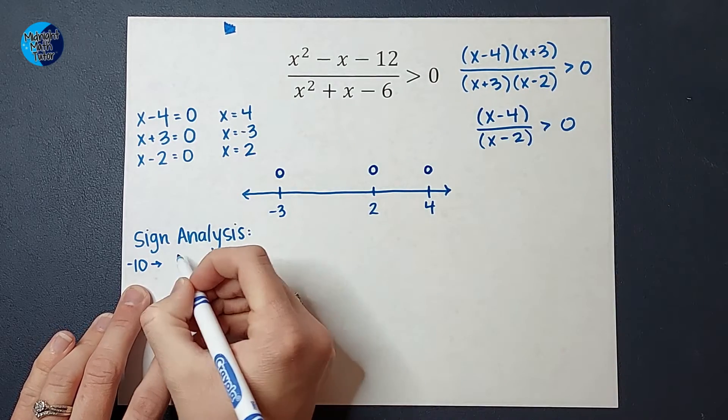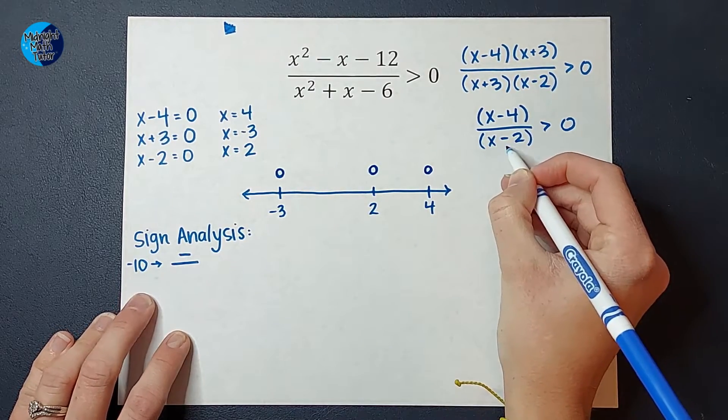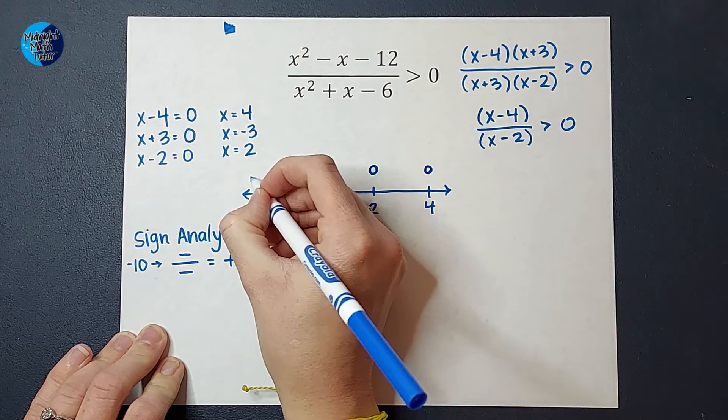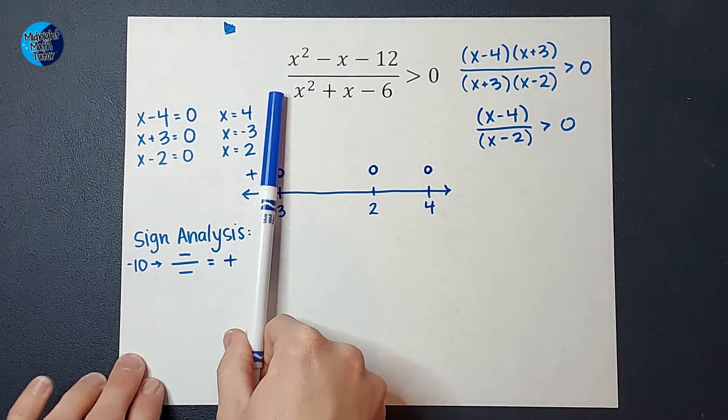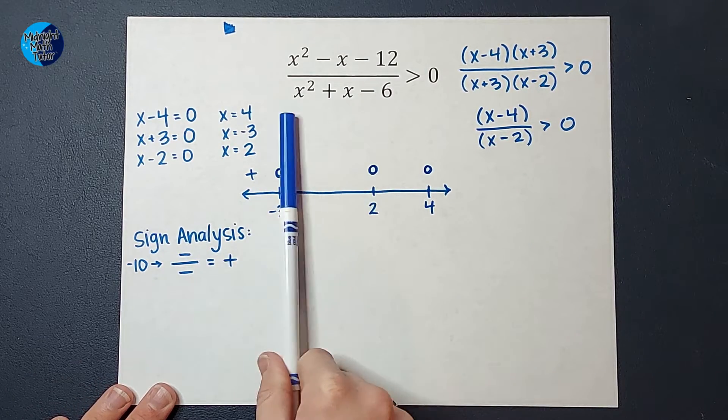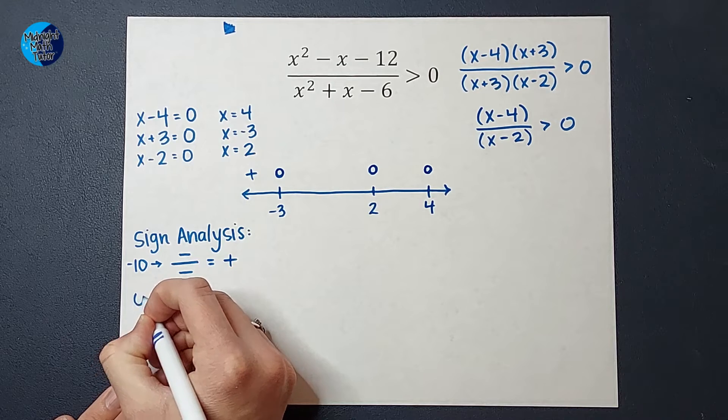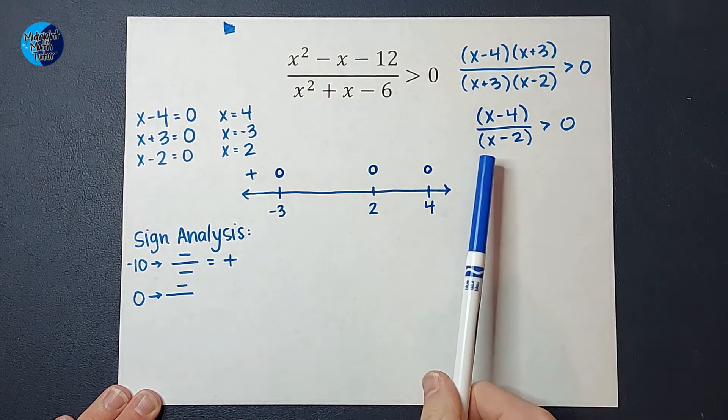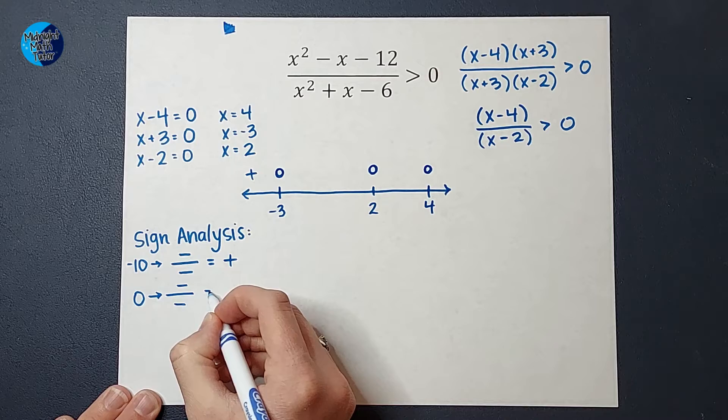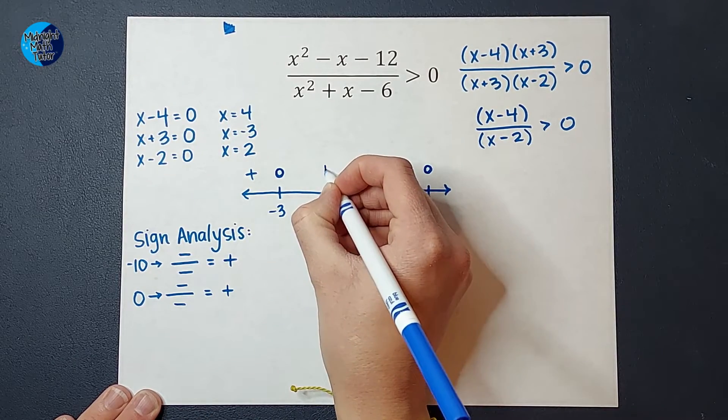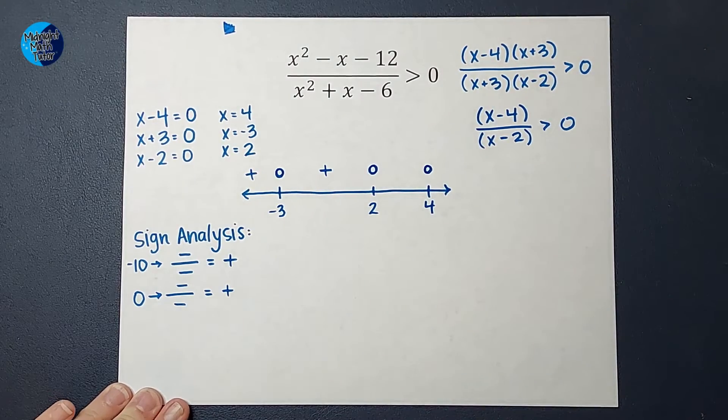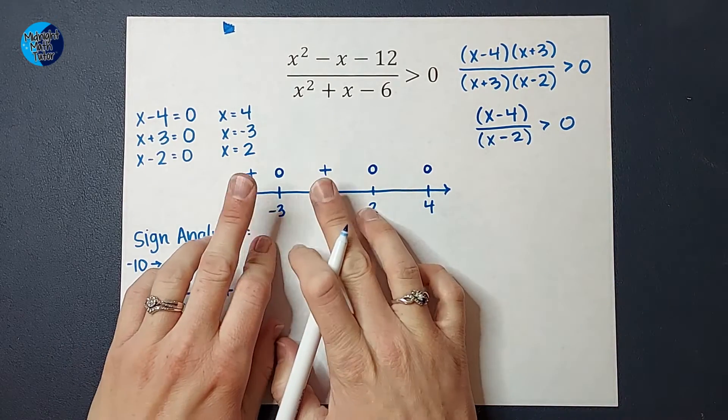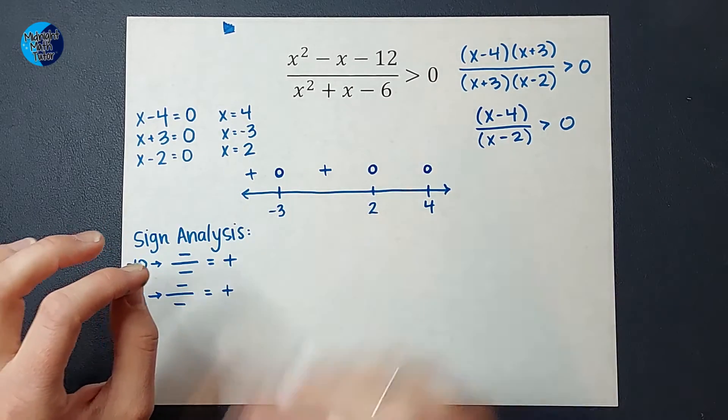All right. So there is my positive region to the left of negative 3. Now we're going to plug in a number between negative 3 and 2. Let's pick 0. 0 is in there. So if I had 0 minus 4, that would give me a negative on top. 0 minus 2 would give me a negative on bottom. Negative divided by negative is positive. Now, if you've been doing these problems before, oftentimes these alternate. Positive, negative, positive, negative. But that is not always the case and this is a great example where that's not the case. We have two positives in a row.